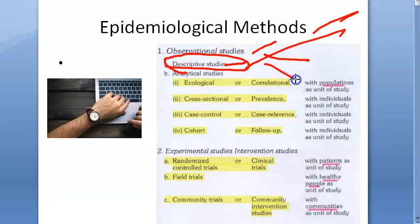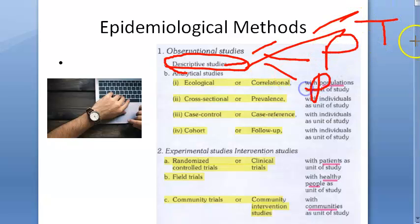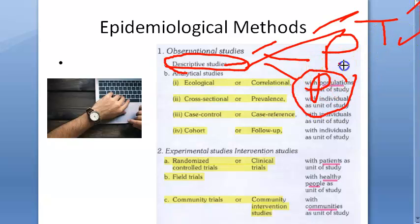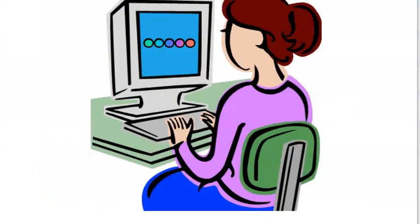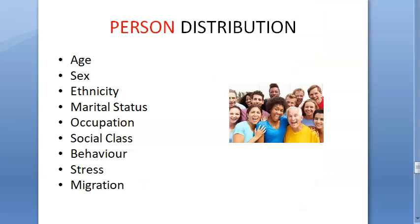In descriptive studies you have three things: time, place, and person. We have finished time and place. Now we will move on to person distribution.